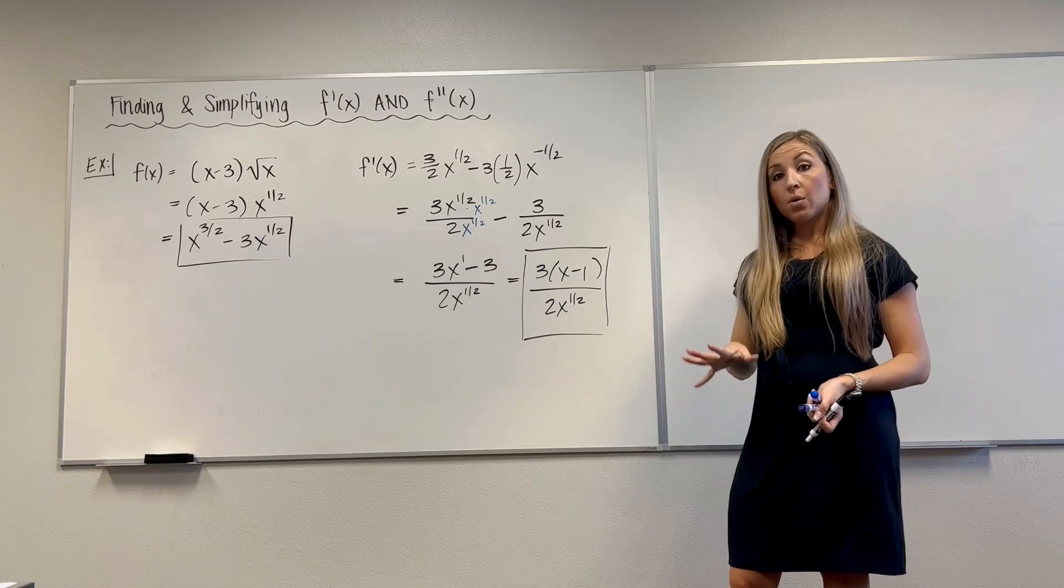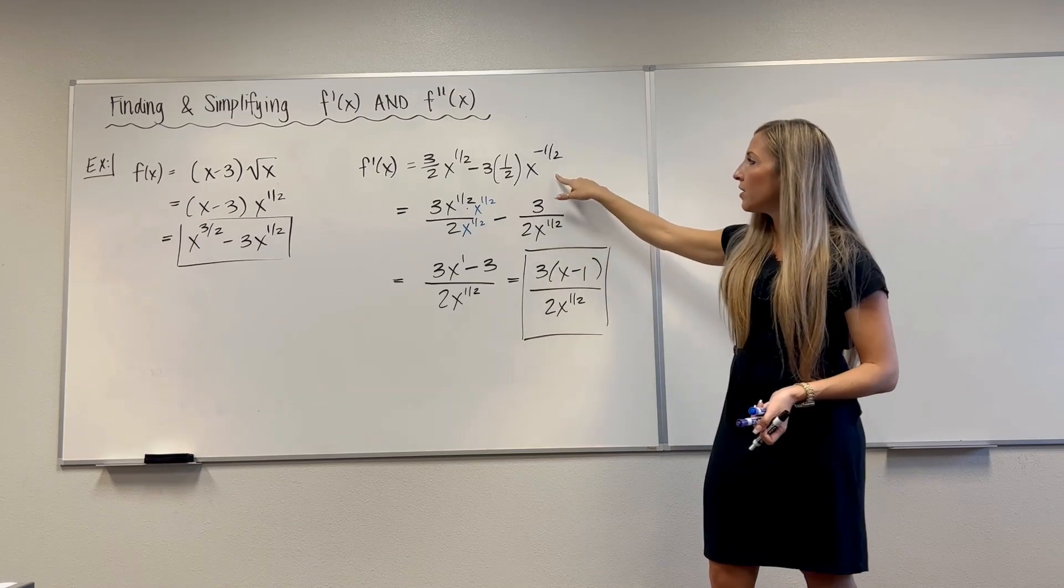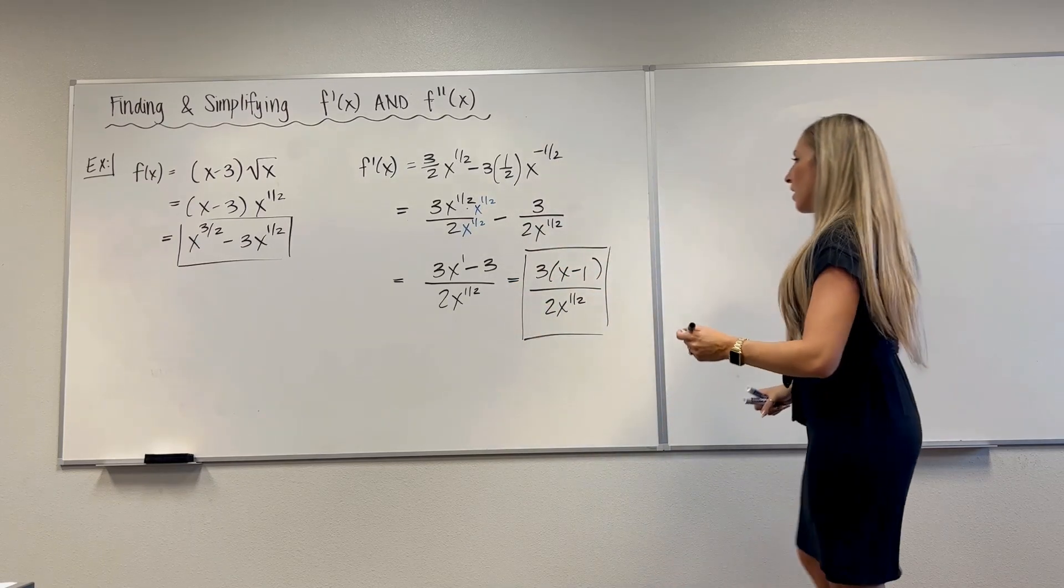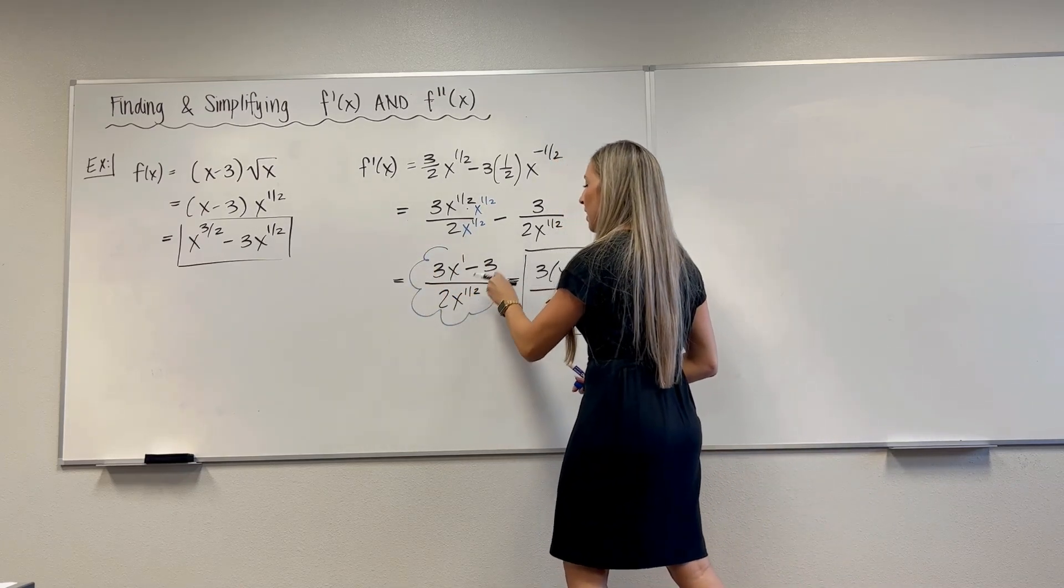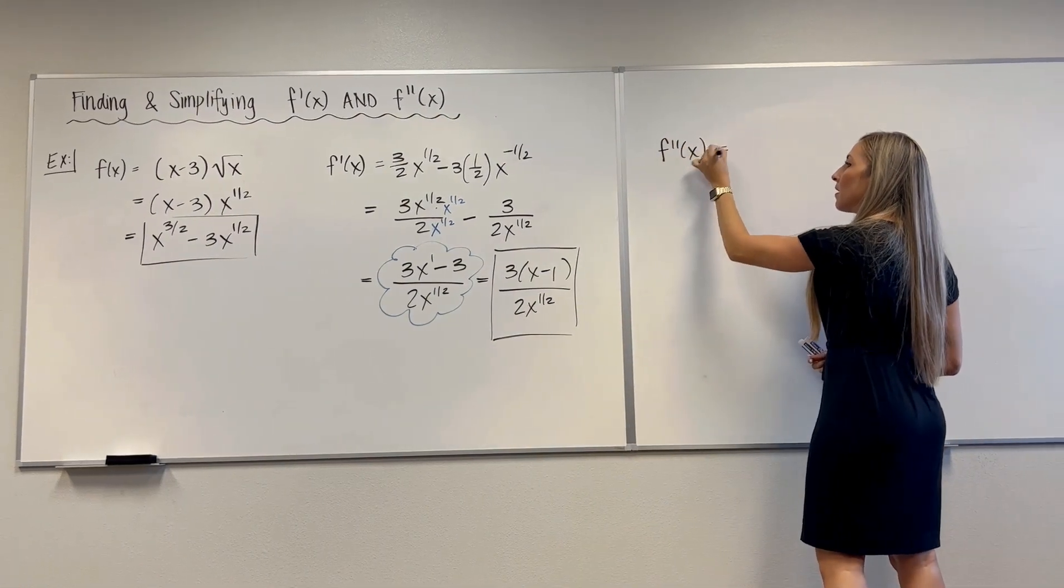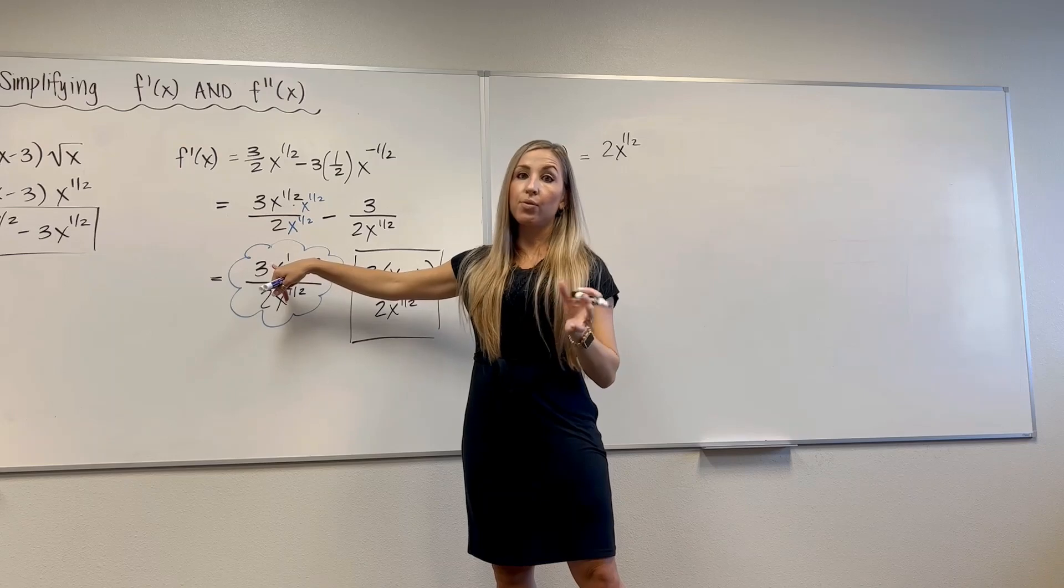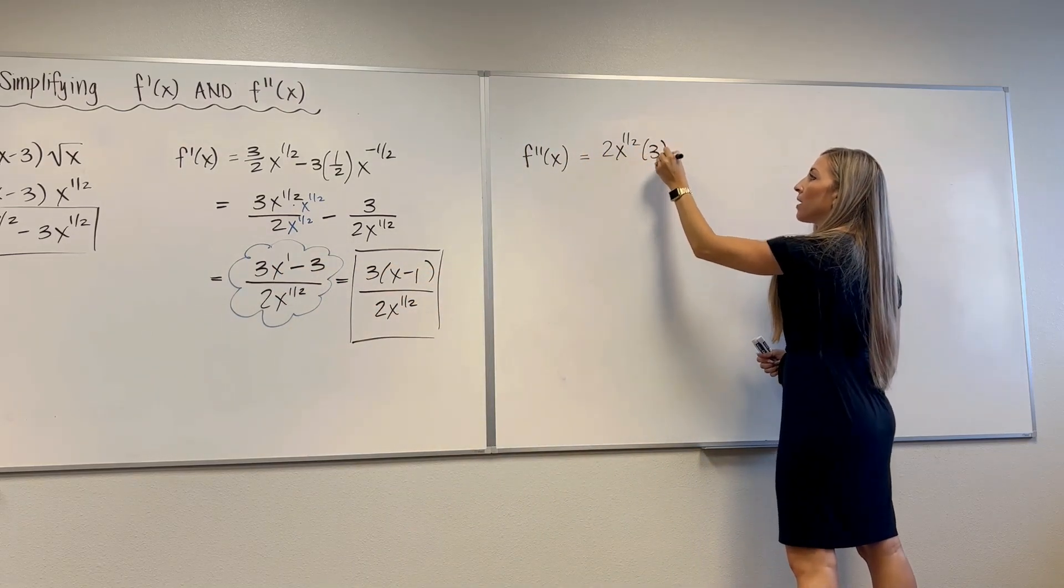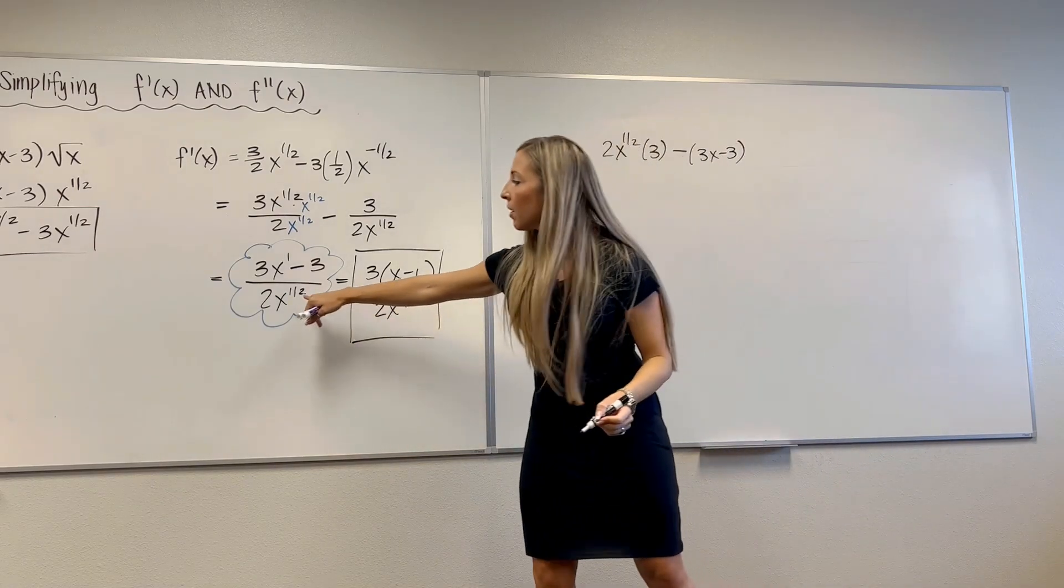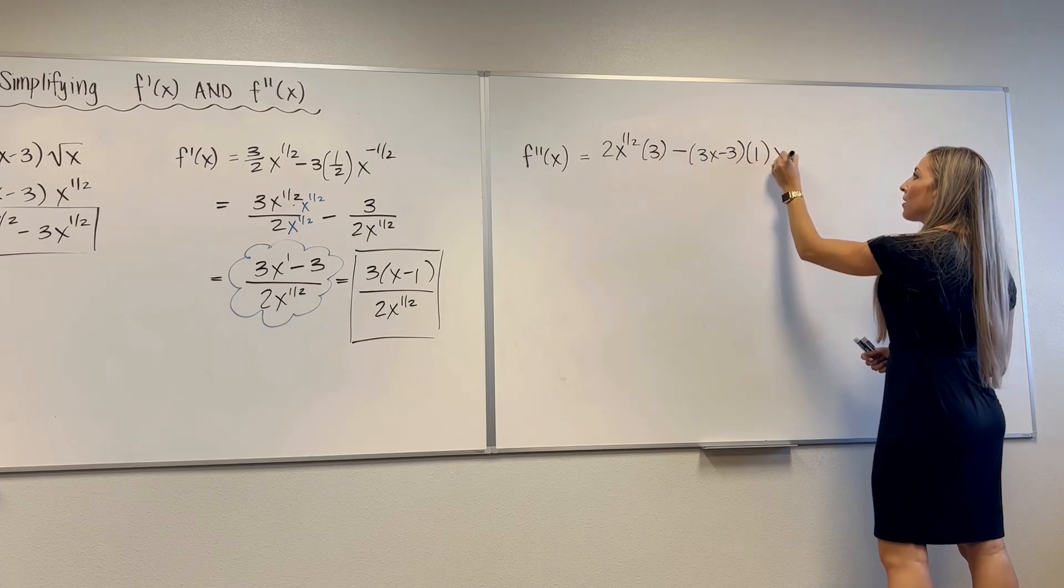We need to do f double prime. So for f double prime, we do have to use the quotient rule. I would. I mean, I guess you could differentiate this again, but it's going to make a little bit more of a mess. So let's use this version here. Before I factored out the 3. We'll use this version here to find f double prime. So f double prime of x. Here we go. We've got low. D high. So derivative of the numerator, derivative of 3x is just 3. Derivative of negative 3 is 0. So 3 minus high.